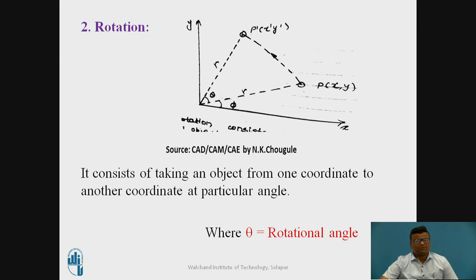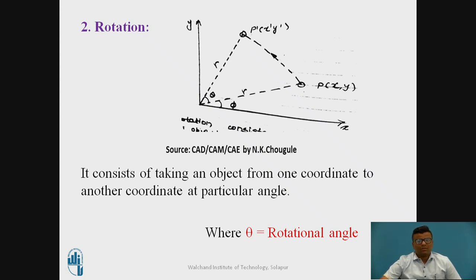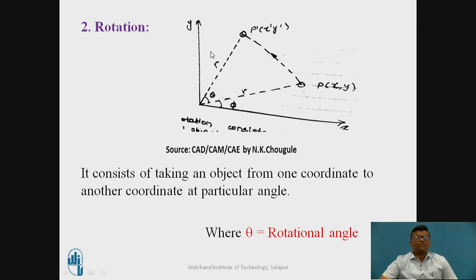Now we will move forward to rotational geometrical transformation. We will go through the figure first. Here, P(X, Y) is our original coordinate. We have to rotate this P(X, Y) through angle theta, which has radius R, so that we can get the new coordinate P dash (X dash, Y dash). P is the original coordinate and P dash is the modified coordinate. It consists of taking an object from one coordinate to another coordinate at a particular angle, where theta is the rotational angle.